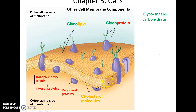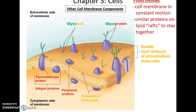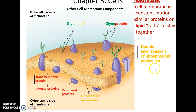Embedded within the cell membrane are cholesterol molecules. Cholesterol molecules are also hydrophobic, so they are intercalated with the fatty acid chains of the phospholipids, and they're important because they help increase the cell's rigidity. It turns out that the cell membrane is very dynamic — everything in it is moving around constantly, all the time. Sometimes proteins that have similar functions will group together and float as a unit on what are called lipid rafts.